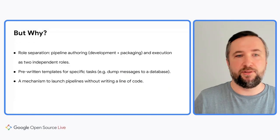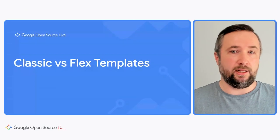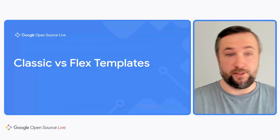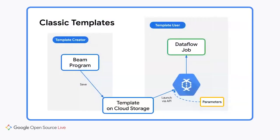Before we talk about how to create a template, it's important to understand different template types supported by Dataflow. We have so-called classic and flex or dynamic templates. With classic templates, the template creator still writes the Beam program, but when the program runs, instead of submitting the job directly to the Dataflow service, the Dataflow runner is going to serialize the pipeline graph and store it on Cloud Storage. Then, when the template user actually wants to run the job using this template, they can submit a request through Dataflow API or through a gcloud command, provide the runtime parameters, and this is when Dataflow actually uses the template and executes the job.